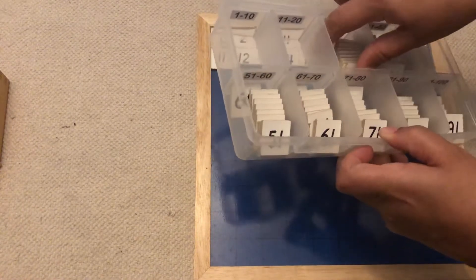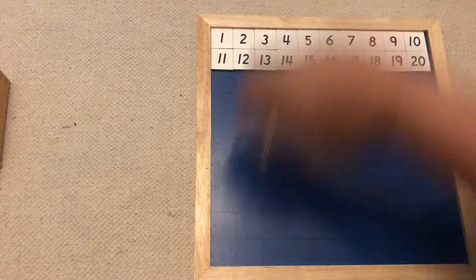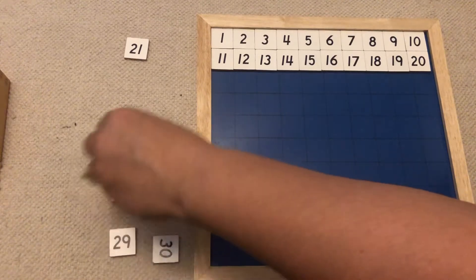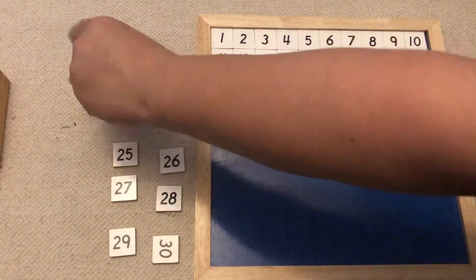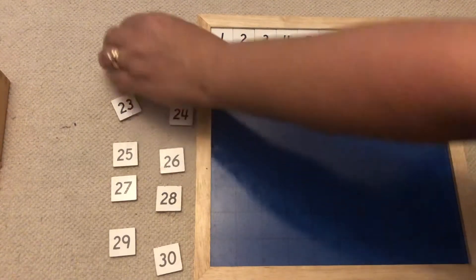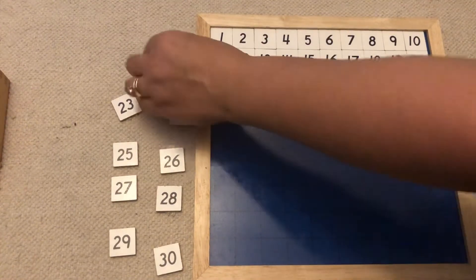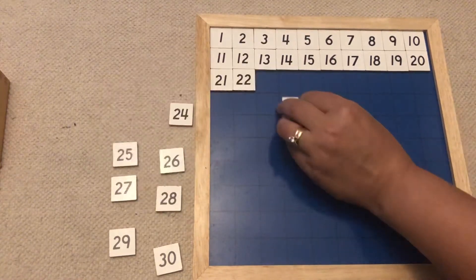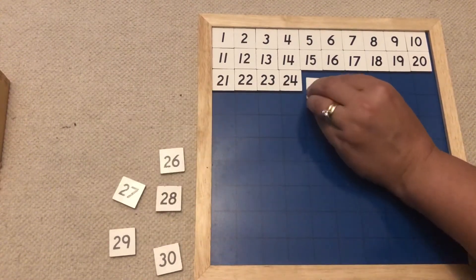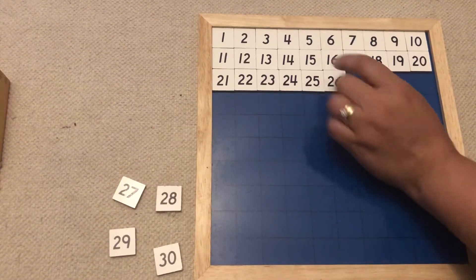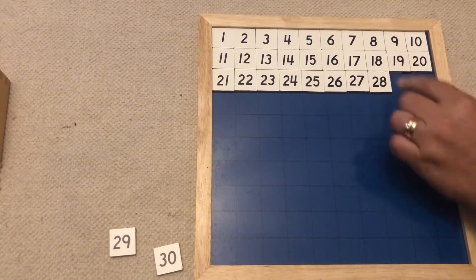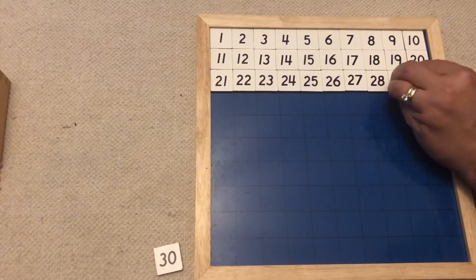Next row. Starting with 21. Oops, I dropped one. I have one sideways number that I've got to fix so I can see it really nicely. All right. After 20 comes 21, 22, 23, 24, 25, 26, 27, 28, 29, 30.